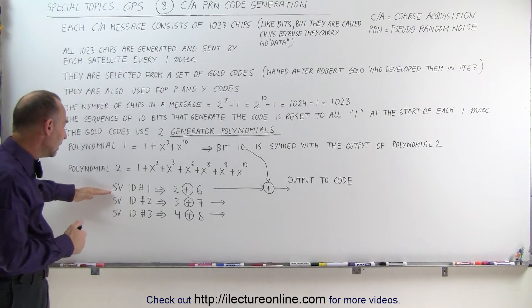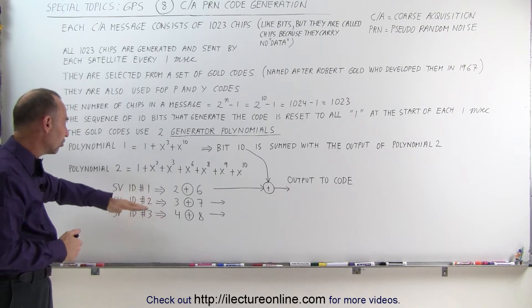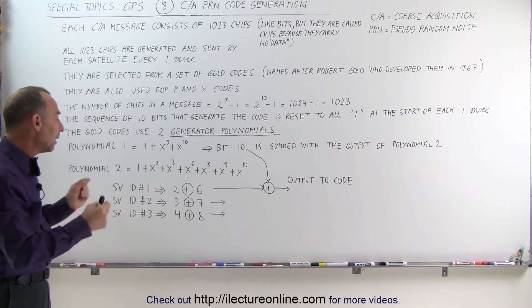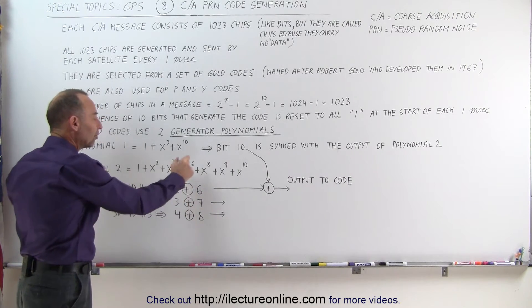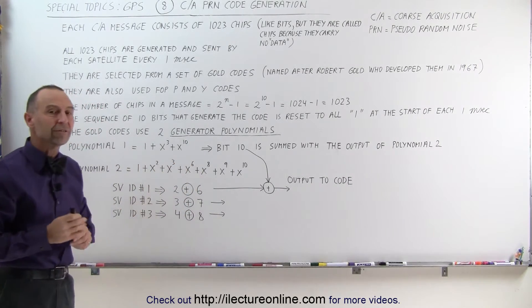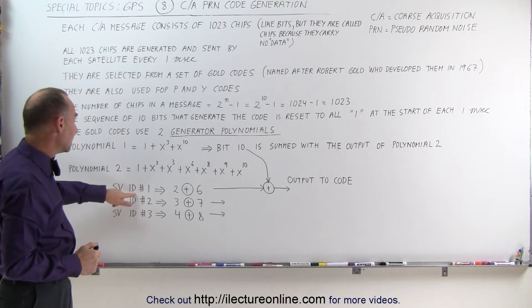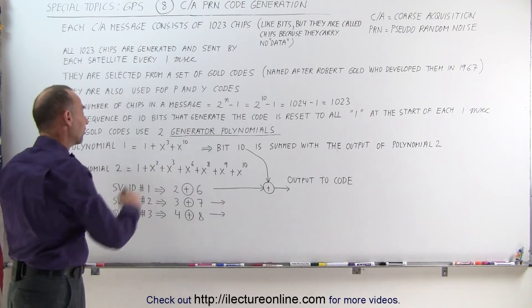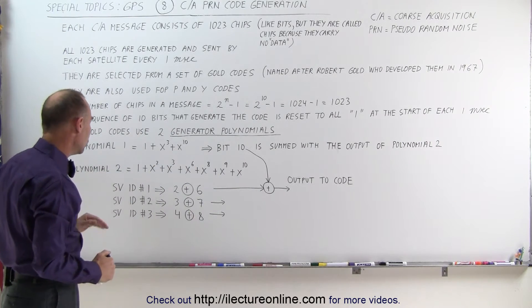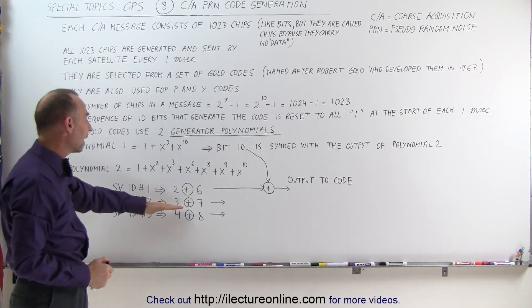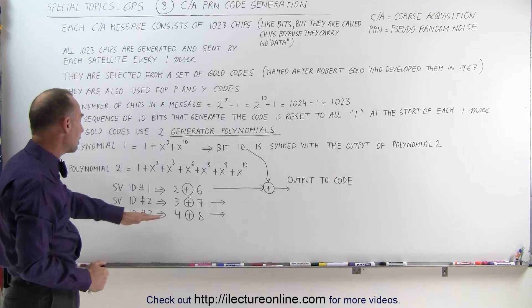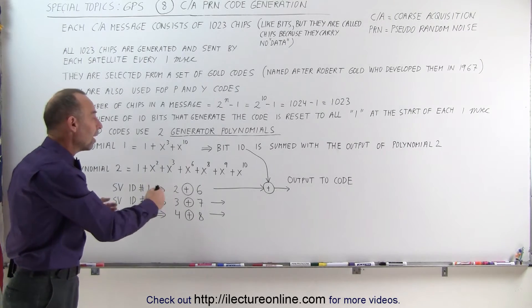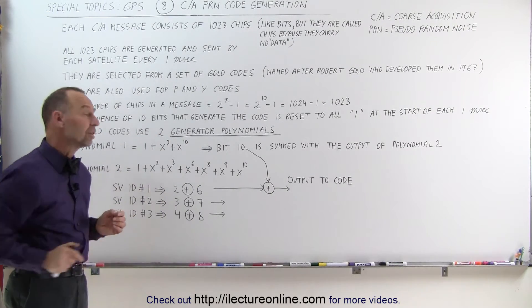Notice that each satellite, each space vehicle has an identification number, 1, 2, 3, so forth. Currently, we have 32 of those satellites and we set up the codes by summing up particular bits in that string of 10 bits. For the ID number 1, SV ID number 1, we sum up 2 and 6 out of the set of 10 bits using polynomial 2. For space vehicle ID number 2, we combine 3 and 7. For ID number 3, we combine 4 and 8. And there's a different number of combinations that we use to sum these up, each, in each case, producing a different code.